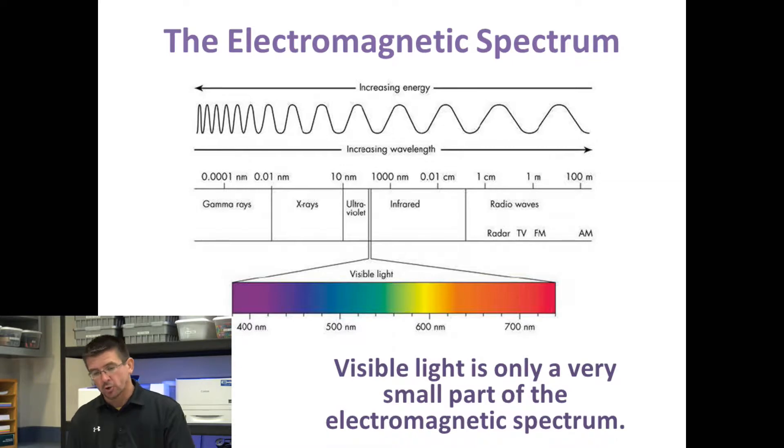We also have larger waves like infrared rays and radio waves that we also can't see. But there's this tiny little range right in the center of that electromagnetic spectrum that makes up the visible light spectrum.